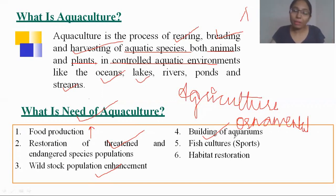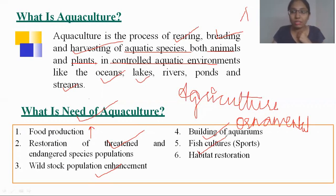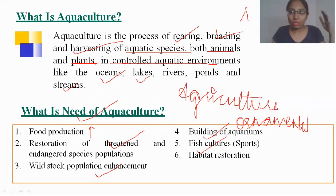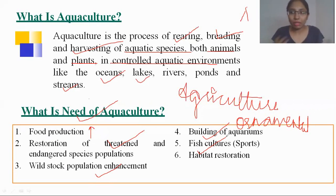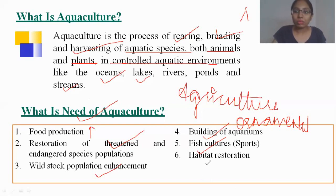For example, goldfish is used for ornamental purposes. Aquaculture is also used for fish culture — some people have a craze for catching fish, which was continuously decreasing fish populations in rivers. By adding fish through aquaculture, they can fulfill their passion for fish catching. Aquaculture can also be used for habitat restoration.